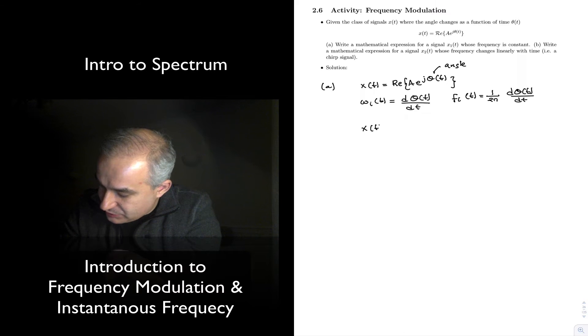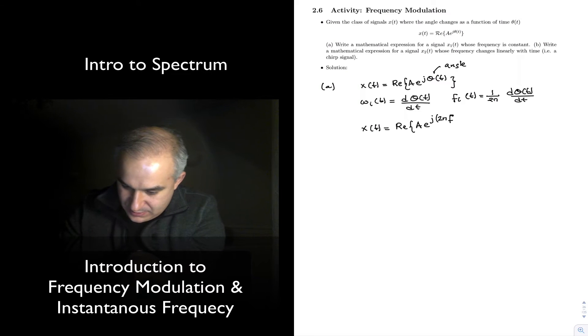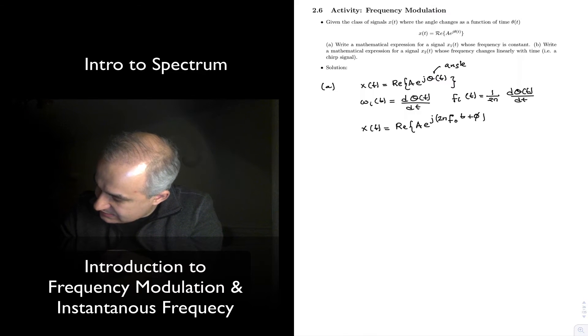when we use something like the real of A times e to the j, 2π f0, and we want to call it a particular frequency there, f0, t plus a phase, which is equal to just A times cosine of 2π f0 t plus a phase.